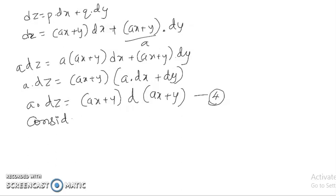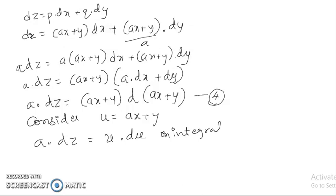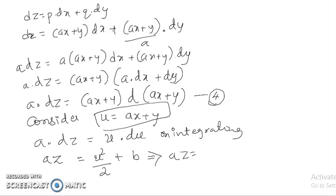Let u = ax + y, so a·dz = u·du. Integrating both sides: a·z = u²/2 + b. Substituting back u = ax + y, the final solution is: az = (ax + y)²/2 + b. This is the complete integral of the given nonlinear partial differential equation. Thank you.